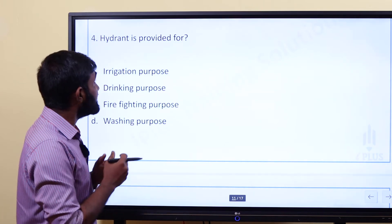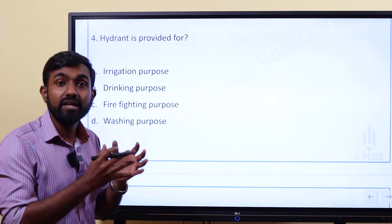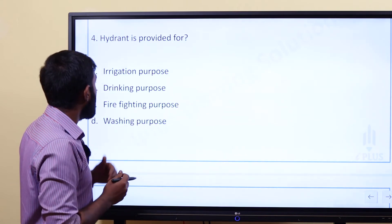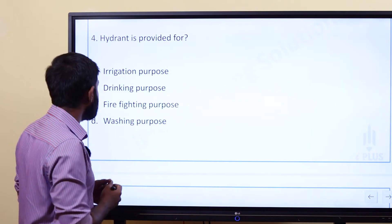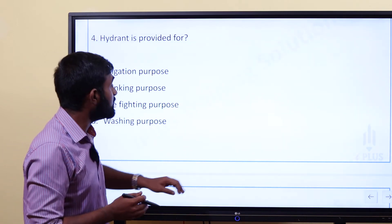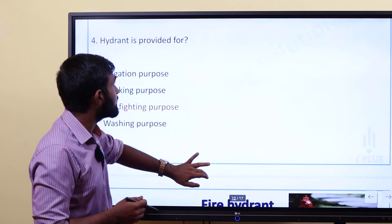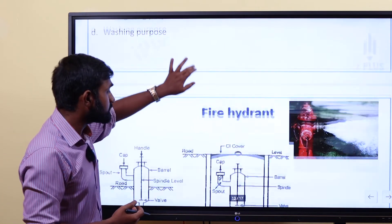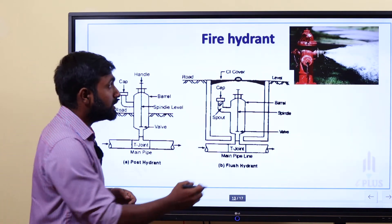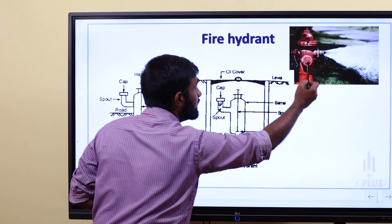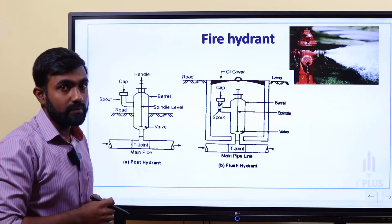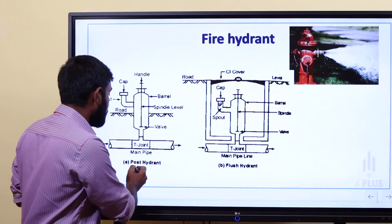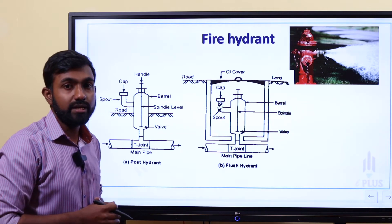Question four: Hydrant is provided for what purpose? Option A: Irrigation purpose. Option B: Drinking purpose. Option C: Firefighting purpose. Option D: Washing purpose. The answer is firefighting — fire extinguishing. Basically, there are two types of fire hydrant: post hydrant and flush hydrant.